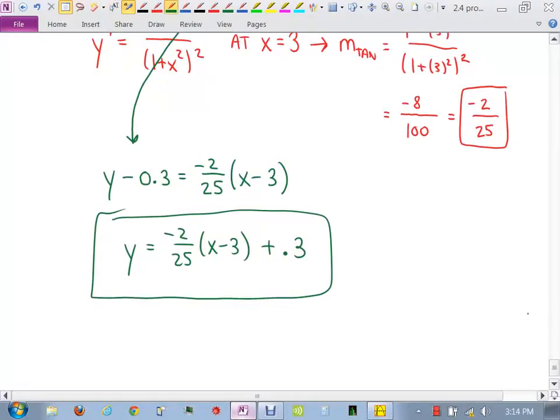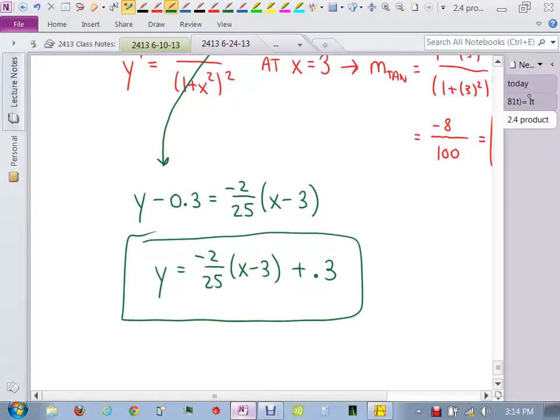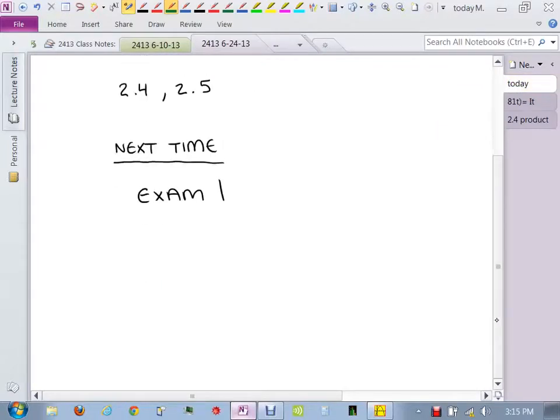All right, let me give you the homework assignment that I'd like for this section. So for the homework for 2.4, you should be looking, this is going to be a lot of problems. It's going to be 3 through 33 odd.